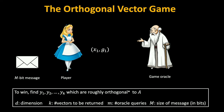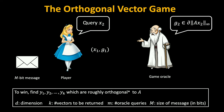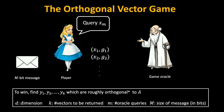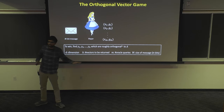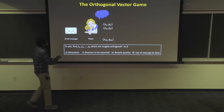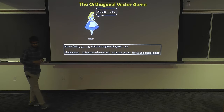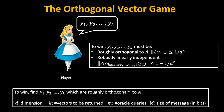Alice makes a query x1, gets a response g1. She can look at the query, the response, and the message, then make another query x2, and keep doing this m times. She makes these m queries and gets these responses, and then the oracle goes away. Now Alice is left with only her initial message and the queries and responses. Her goal is to eventually come up with k vectors y1 through yk which are roughly orthogonal to A — so Ay L-infinity is sufficiently small. And these vectors should satisfy a robust linear independence condition: yi should not have a very large component in the span of y1 through y_{i−1}.